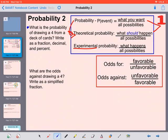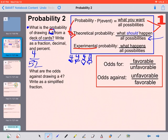So it says, what is the probability of drawing a 4 from a deck of cards? Write as a fraction, decimal, and percent. All the possibilities, there are a total of 52 cards in a deck. We have ace, two, three, four, five, six, seven, eight, nine, ten, jack, queen, king. That's 13 cards and there are four suits: diamonds, hearts, spades, and clubs. So the probability of drawing a 4, well, there's a 4 of hearts, there's a 4 of clubs, a 4 of diamonds, and a 4 of spades.